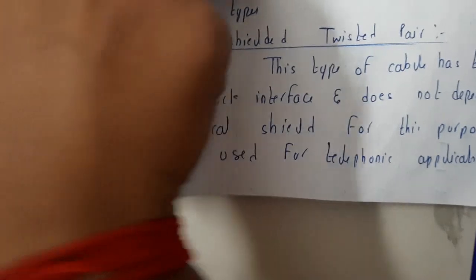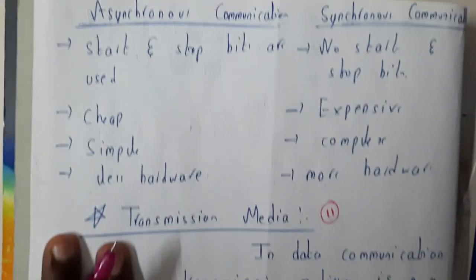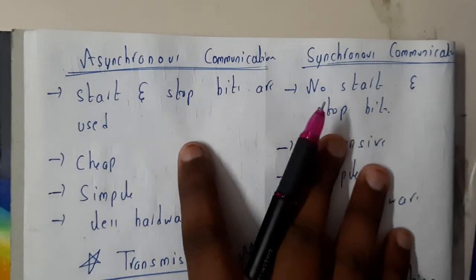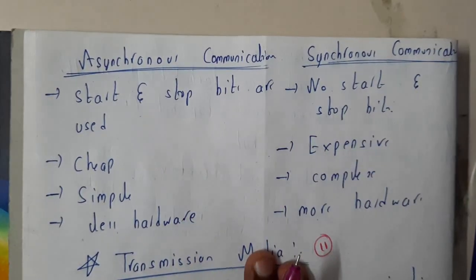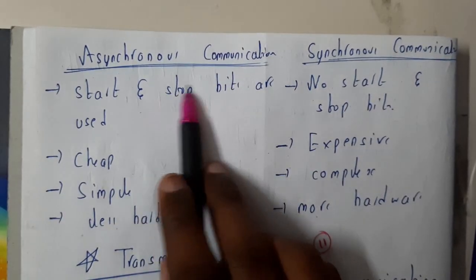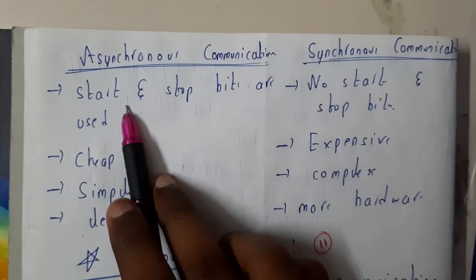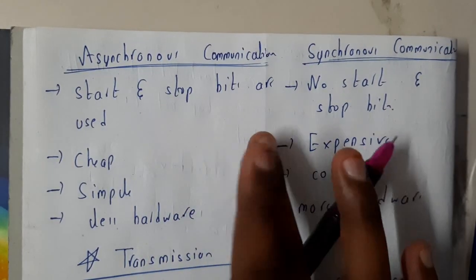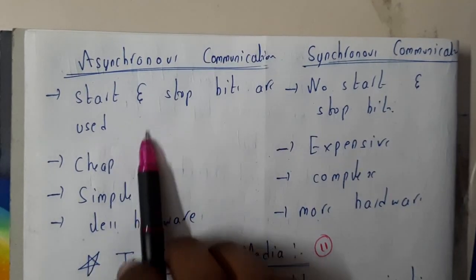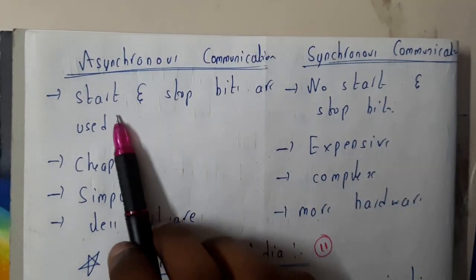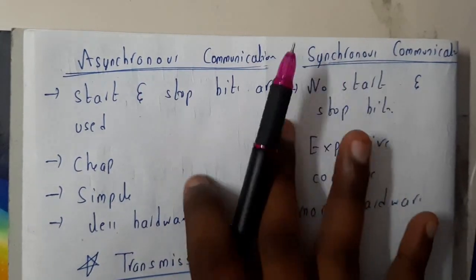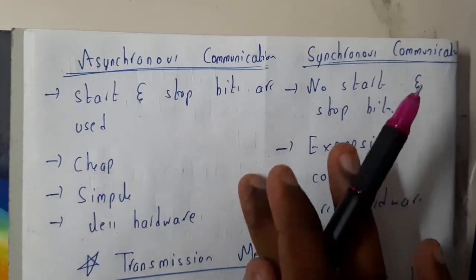Now let us go through the differences between asynchronous communication and synchronous communication. Please remember, these two are possible only in serial communication. Note that the order here is asynchronous first and synchronous second, which is the reverse of what we previously covered.